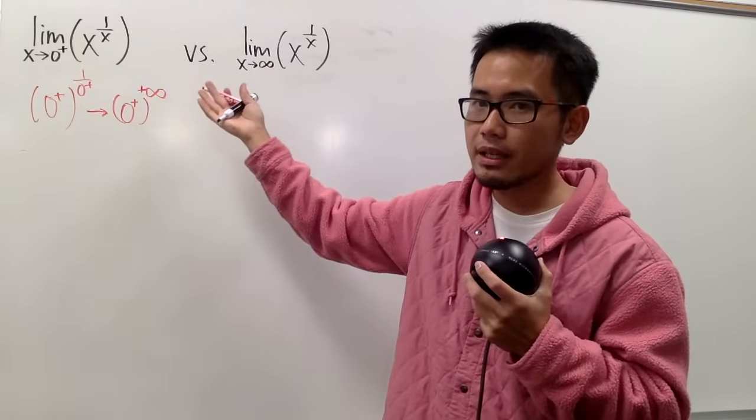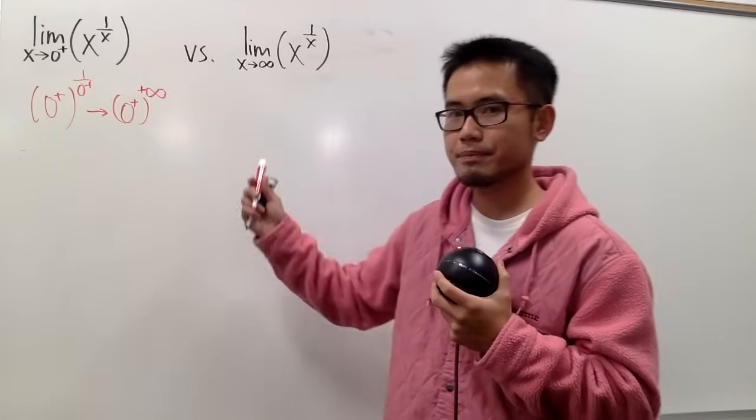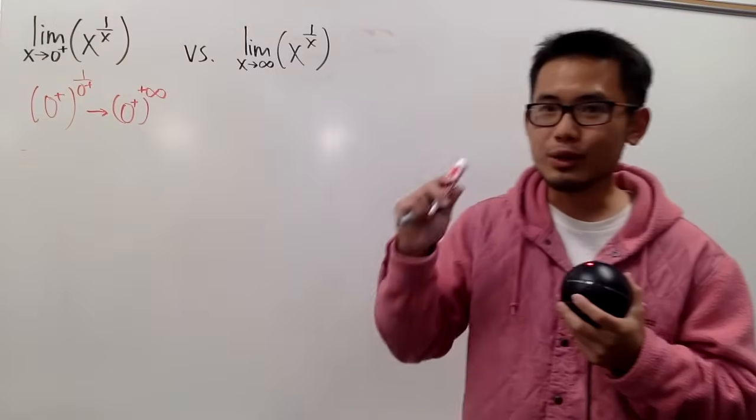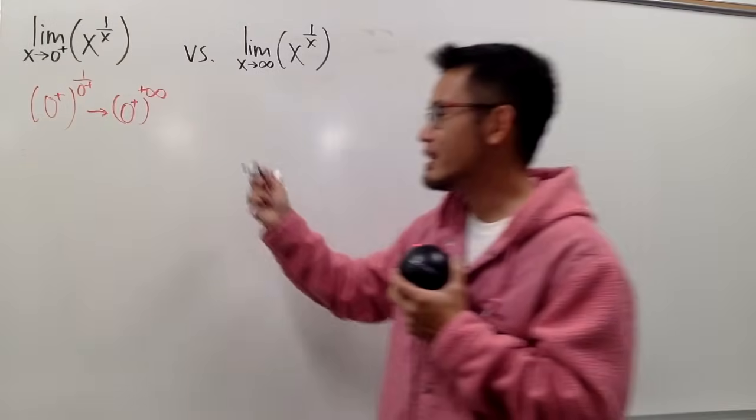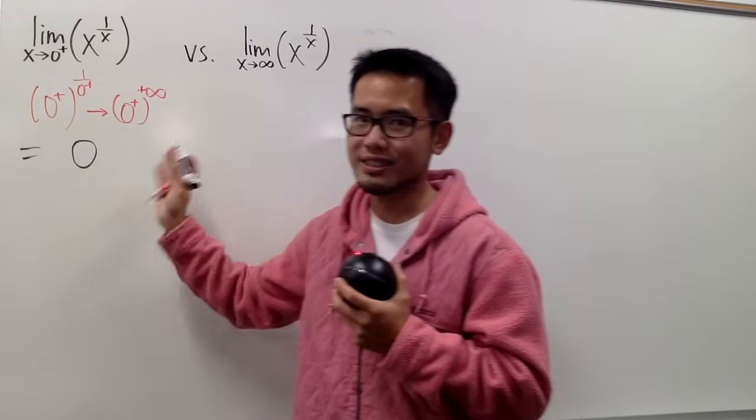And now, technically this is just like 0 to the infinity power, and this is positive infinity. Is this one of the indeterminate forms? Well, no. In fact, 0 to the positive infinity, this right here, we get to draw conclusions right away.